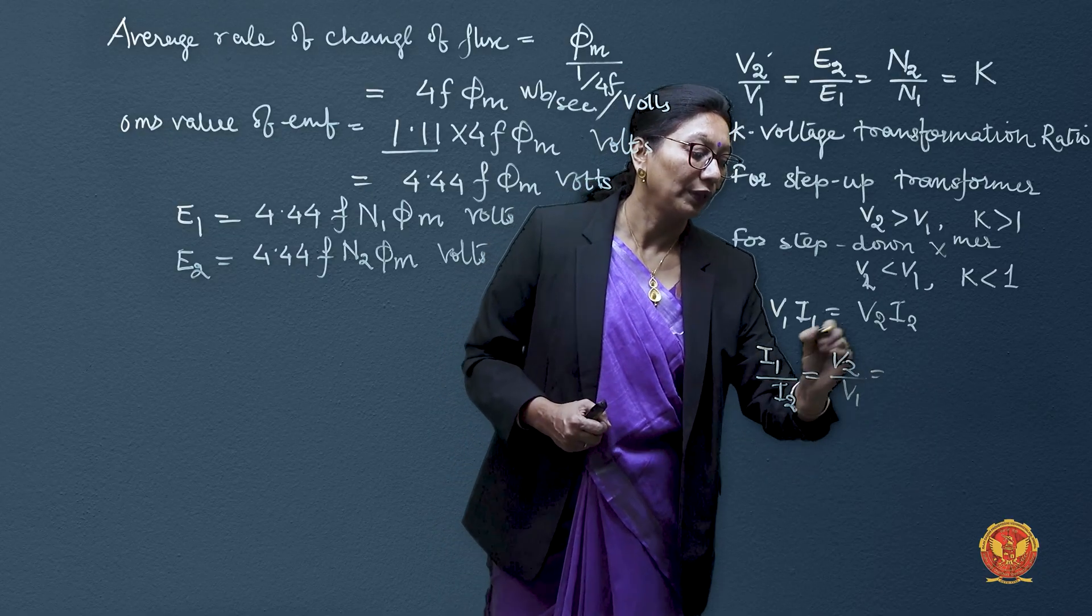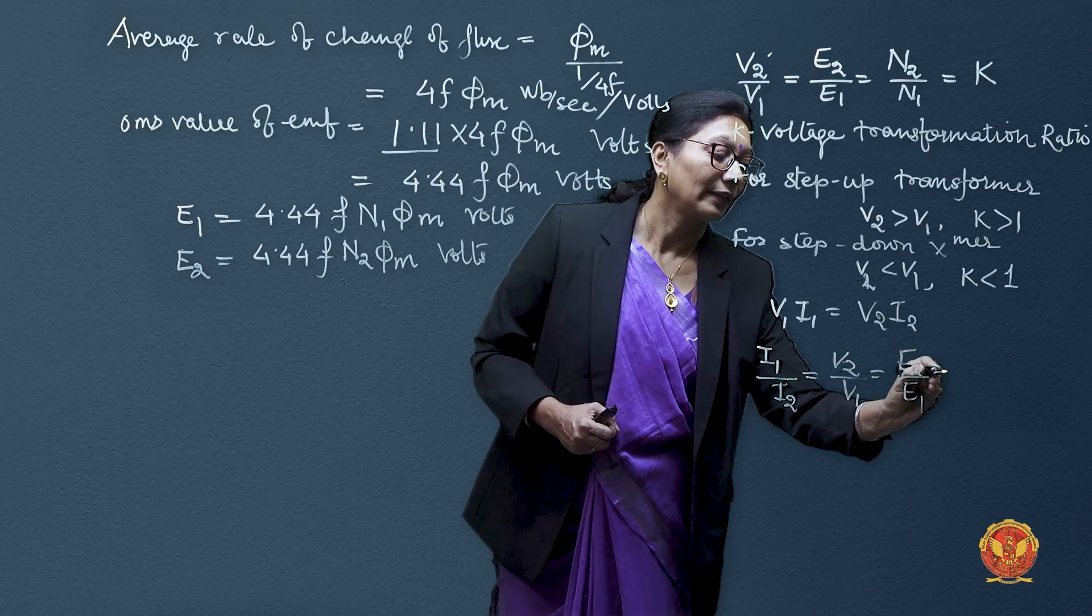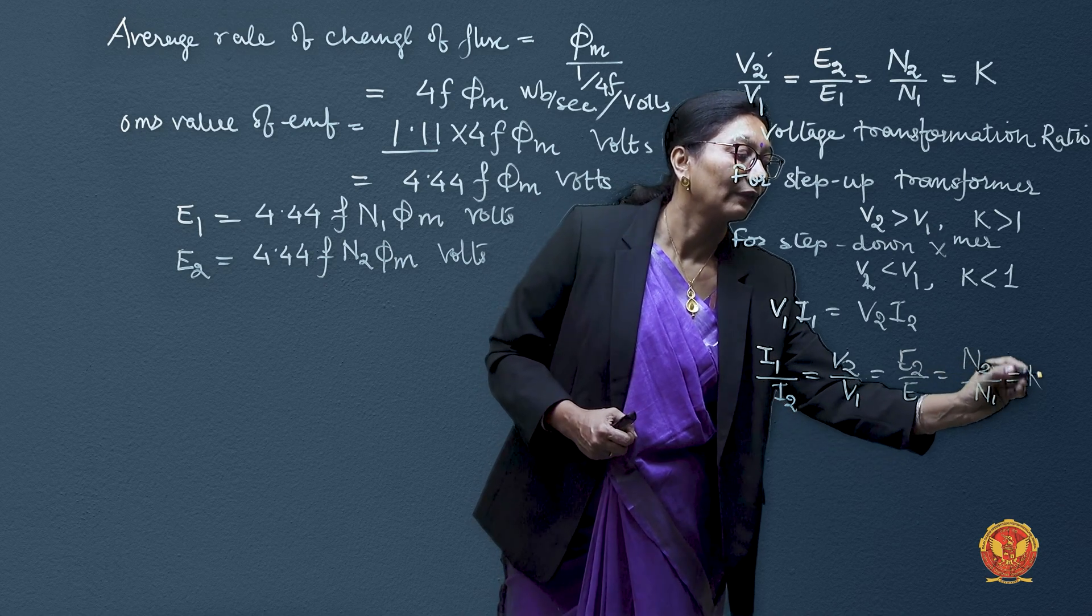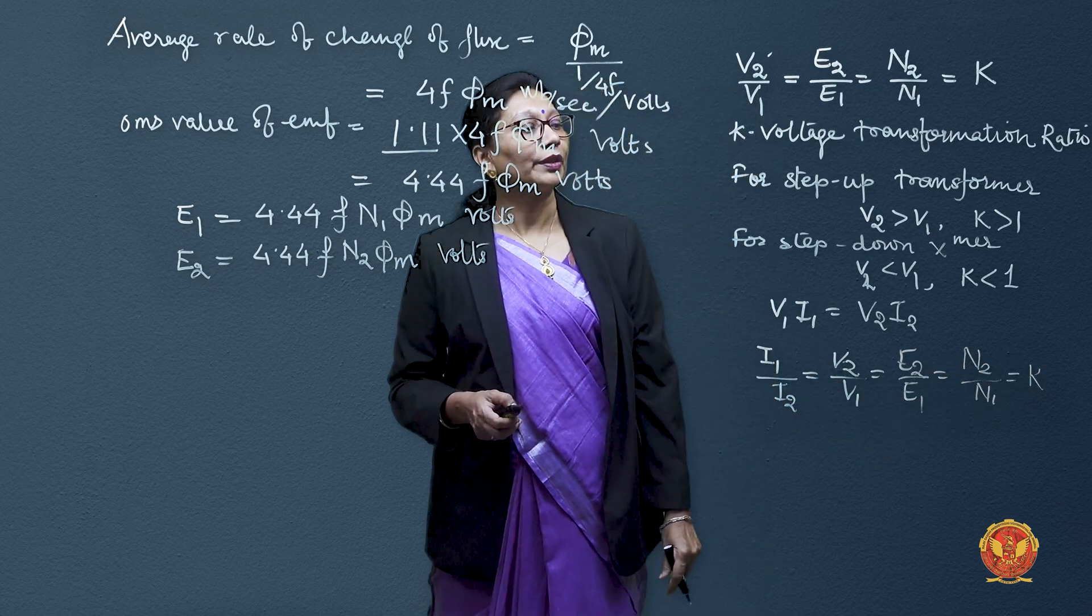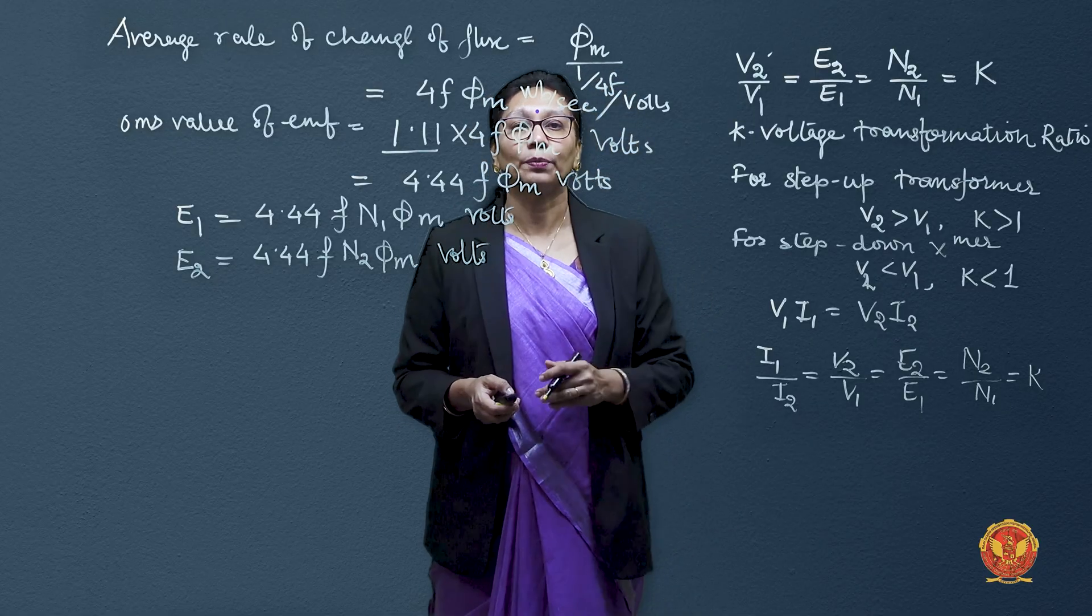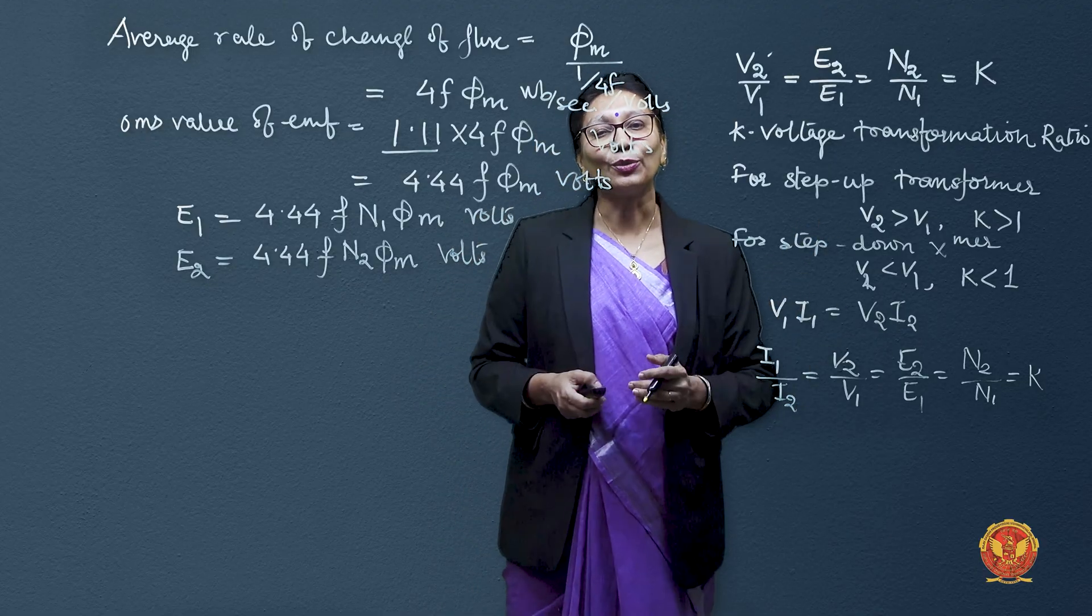I1/I2 would be equal to V2/V1, and therefore E2/E1, and therefore N2/N1, which is again equal to K. So this way we can relate all the quantities in the primary winding to all the quantities in the secondary winding.